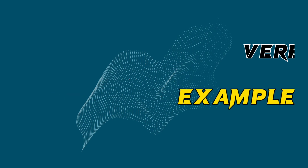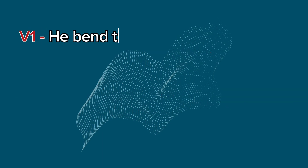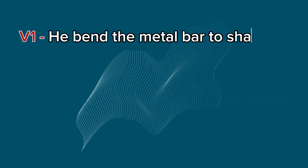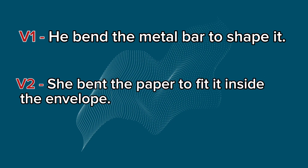Verb forms example sentences. V1: He bend the metal bar to shape it. V2: She bent the paper to fit it inside the envelope.